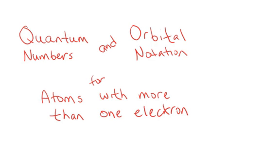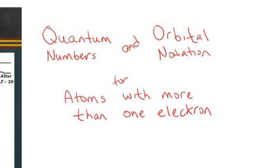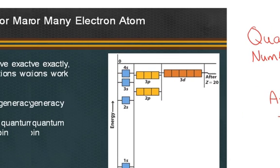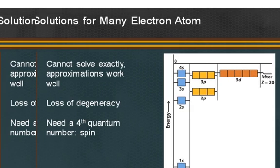Let's take a look at the quantum numbers and orbital notation for atoms with more than one electron. The Schrödinger equation has been solved for the hydrogen atom, which has one electron.